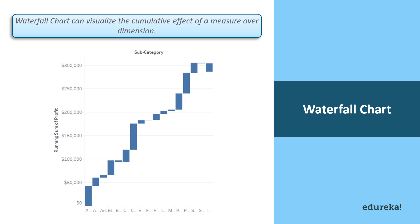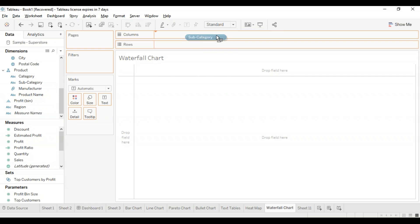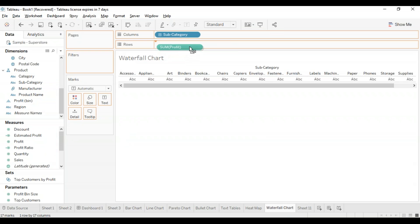Next I'm going to show you how to make a waterfall chart, which is one of those charts that requires a little more work than the others. A waterfall chart visualizes the cumulative effect of a measure over a dimension — it basically shows the contribution of growth or decline by each member of a dimension. For example, you can see the contribution of profit by each subcategory using a waterfall chart. We'll start by making a basic bar chart on a new worksheet — take subcategory in the columns and profit in the rows, which by default creates a bar chart.